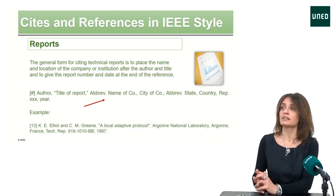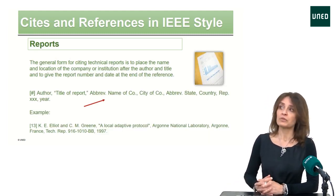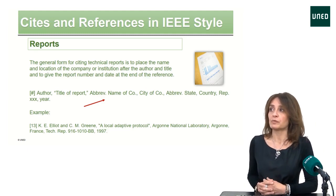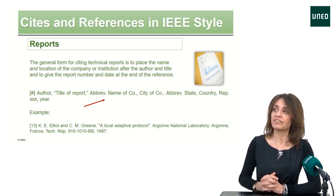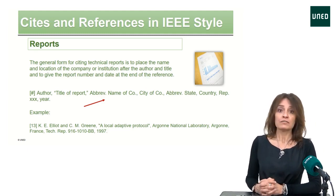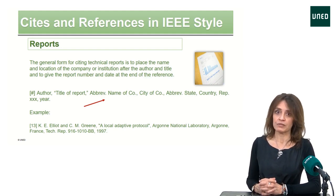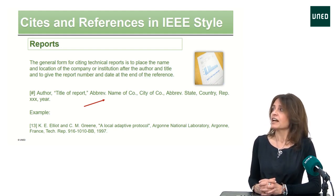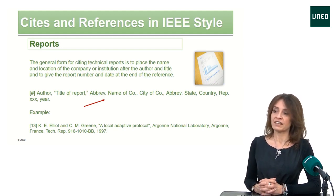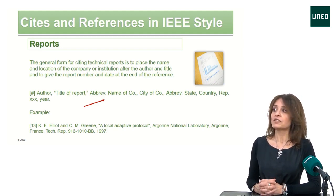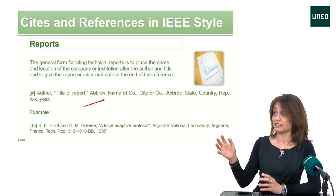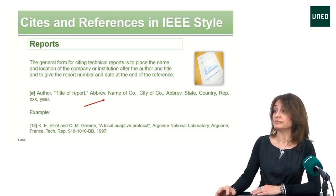It is also common in engineering and computing to cite reports. The general form for citing technical reports is to place the name and location of the company or institution after the author and title, and to give the report number and date at the end of the reference, as in the example here.